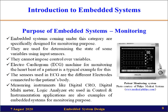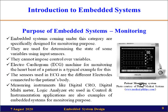The fourth purpose is monitoring. Embedded systems in this category are specially designed for monitoring purposes — they are used for determining the state of some variables using input sensors, but there is no control over those variables; the sensor data decides the variable values. An electrocardiogram (ECG) is one such example, used for monitoring the heartbeat of a patient through electrodes connected to the patient's body. Instruments like digital CROs, digital multimeters, and logic analyzers also fall under this monitoring purpose. An example is a patient monitoring system.